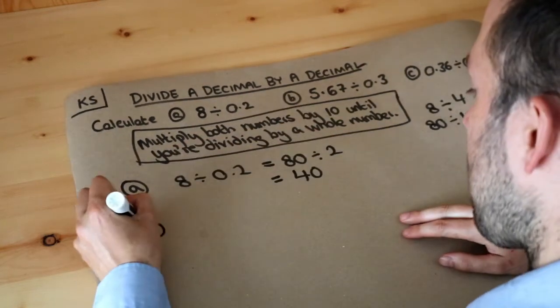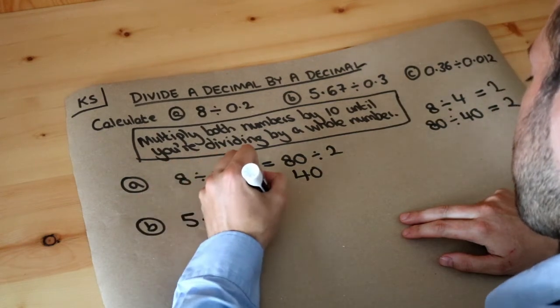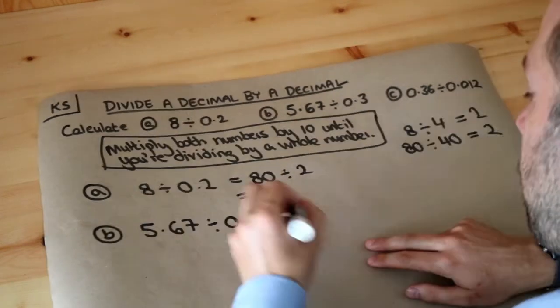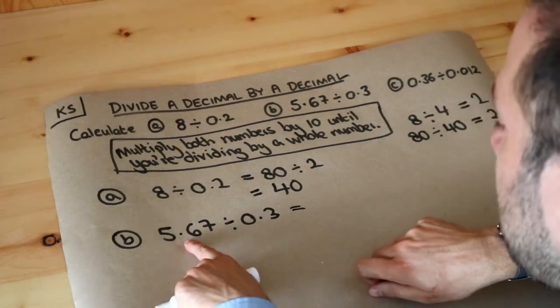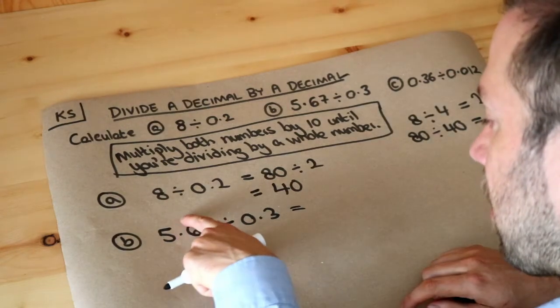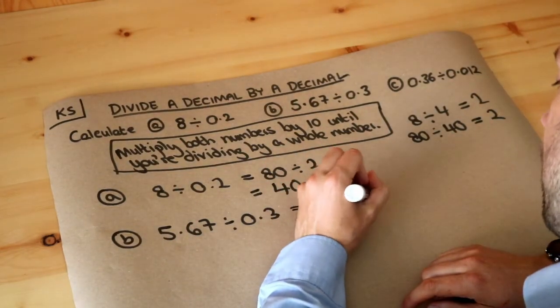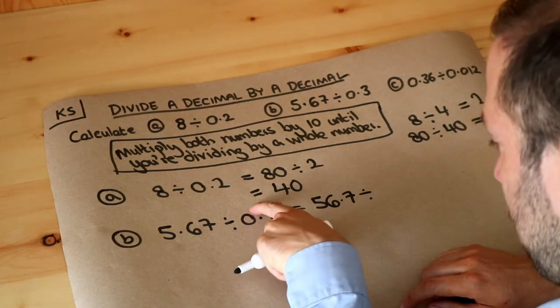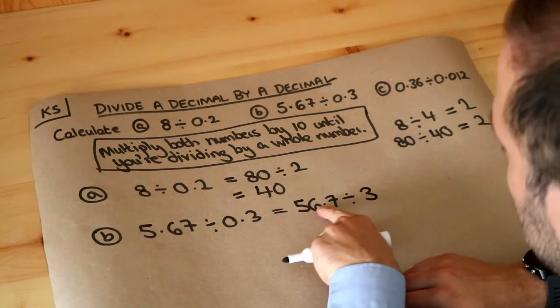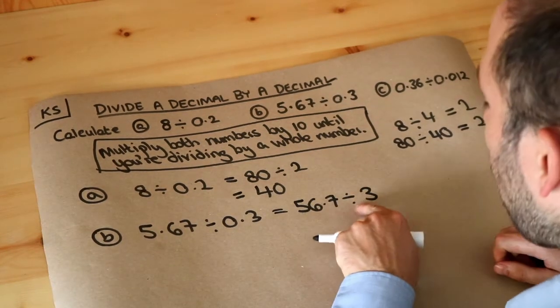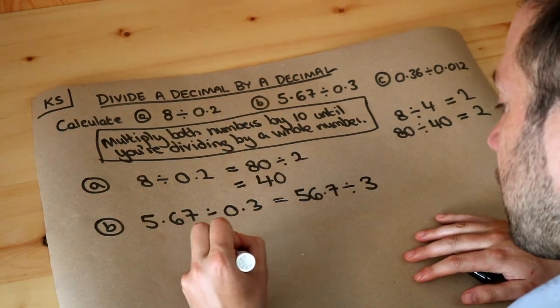So about (b): 5.67 divided by 0.3. Again, we can just times both these numbers by 10 until we're dividing by a whole number. So if we times that by 10, you move the decimal point once, you get 56.7, and if you times this by 10, the decimal point moves once, you get 3. And now, although that's not a whole number, we are dividing by a whole number, so that's okay.